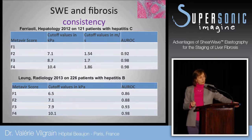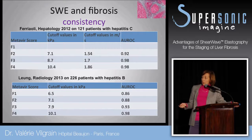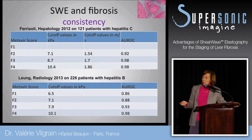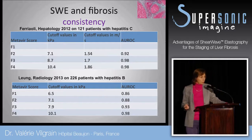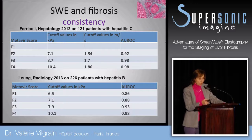Another interesting aspect is the consistency of the data. Here I show two studies — a large one in hepatitis C and another, even larger, in hepatitis B. If we look at the different cutoff values, things are very consistent whatever the cause of the underlying liver disease. For F2, you easily get a cutoff value of 7.1, and in both studies the cutoffs show very high areas under the curve.